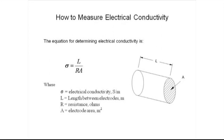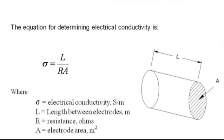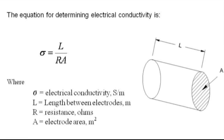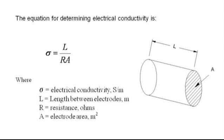The equation for determining electrical conductivity is sigma equals L over RA. Sigma is the electrical conductivity in Siemens per meter. L is the length between electrodes in meters, R is the resistance in ohms, and A is the electrode area in square meters.